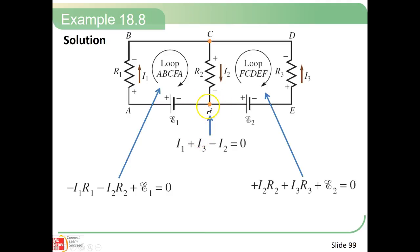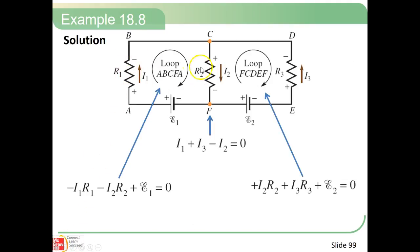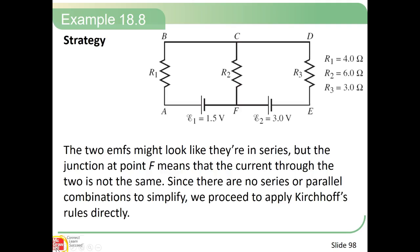At junction F, we apply the junction rule: I1 plus I3 minus I2 equals zero. I1 and I3 are going in the same direction; I2 is going in the opposite direction. So we use that equation along with equation number two. We've got negative four ohms times I1, so that's negative R·I1 minus R·I2 plus the voltage in the first battery. Looking at the figure, here's R1 and R2, here's R2 and R3, and the voltages are 1.5 on the left and 3 on the right.